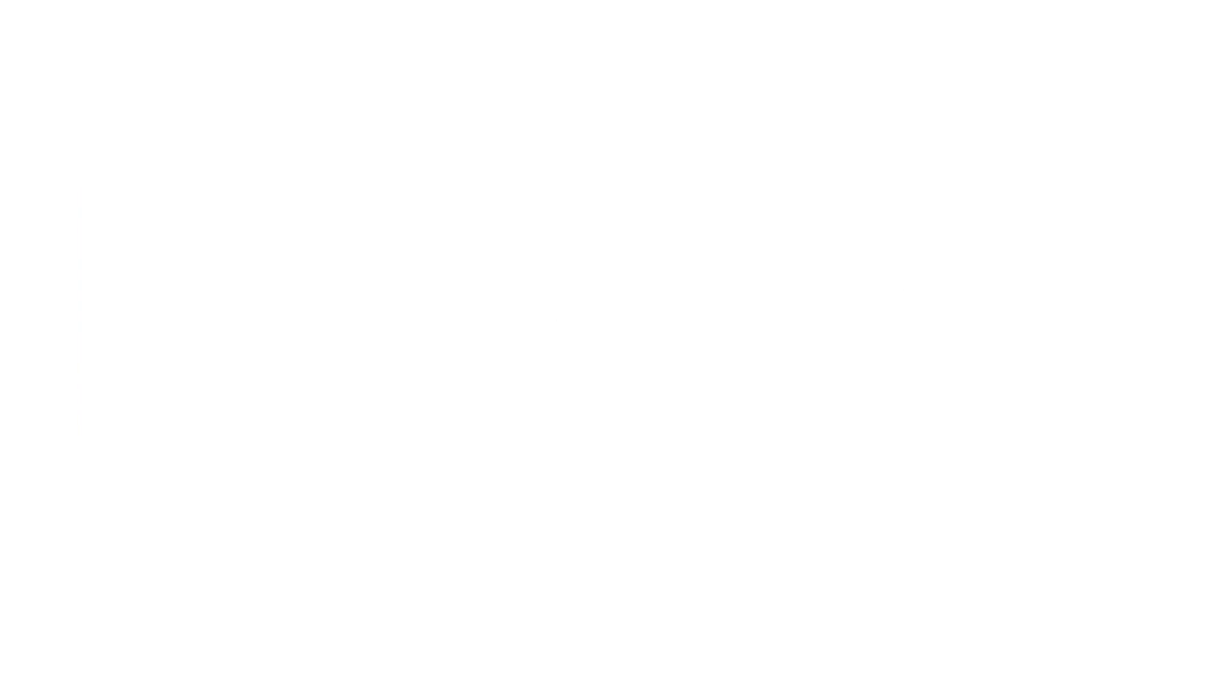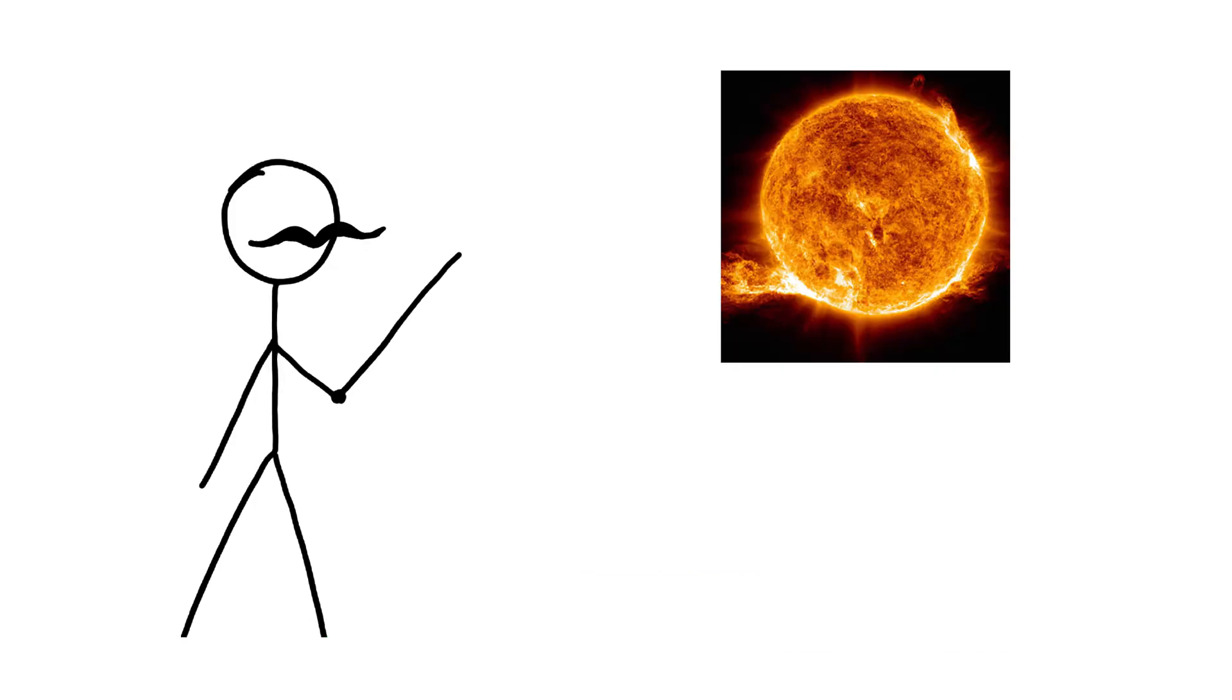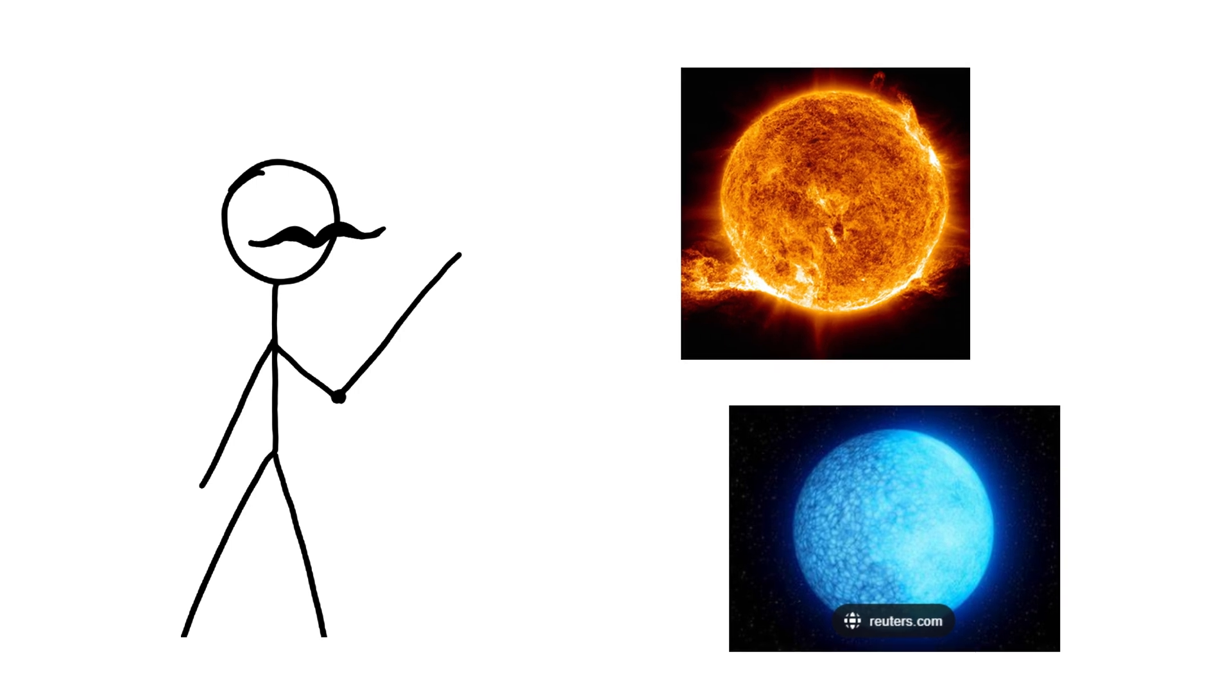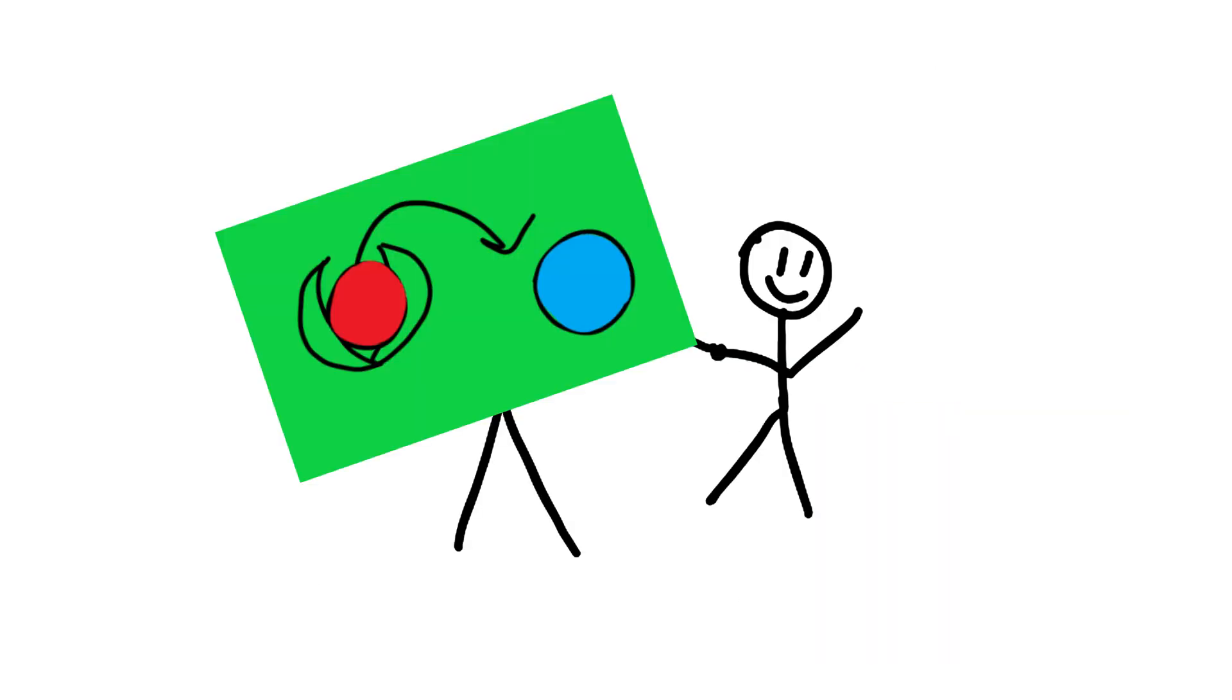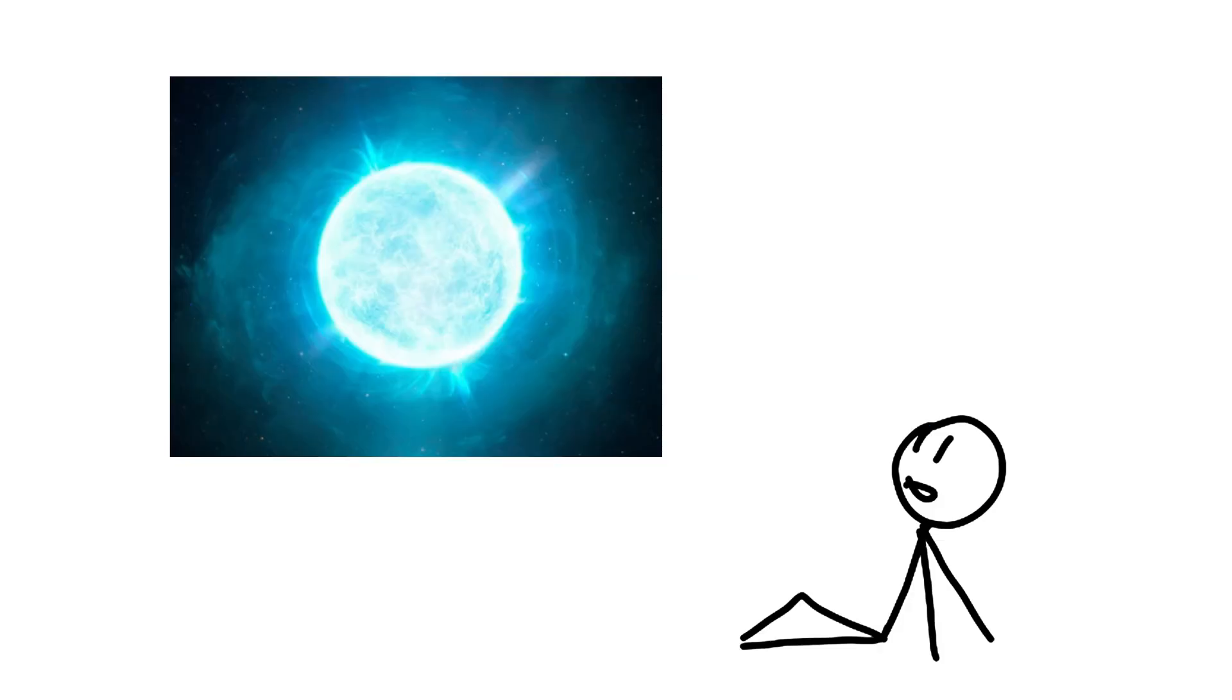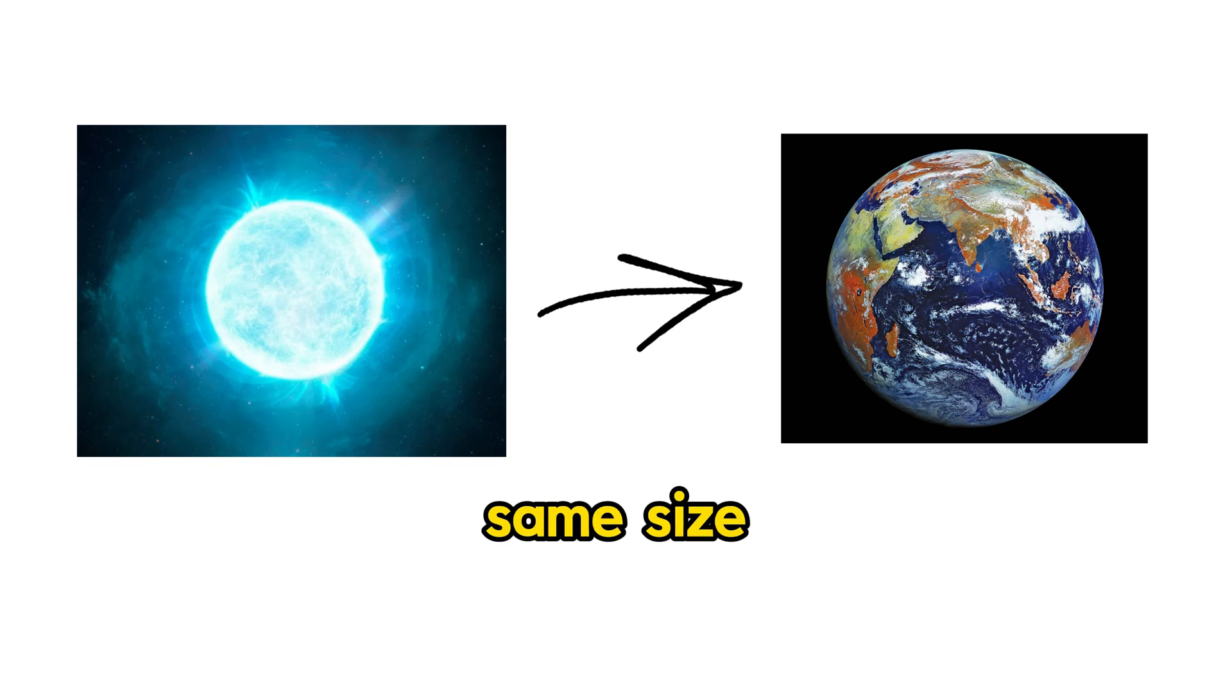White dwarfs are very small, dense stars. They are what is left when a star like our sun uses all its fuel. When this happens, the star loses its outer layers and only a hot core remains. This core is called a white dwarf. White dwarfs are about the size of Earth, but they are very heavy. A small piece of a white dwarf would weigh a lot on Earth.